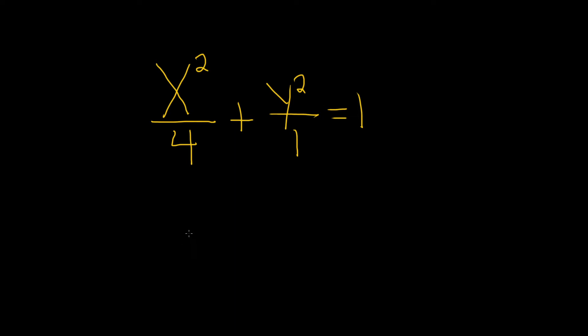In this problem, we're given the equation of an ellipse, and we're asked to find the vertices, the endpoints of the minor axis, and the foci, and graph it. So in other words, we pretty much have to do everything.